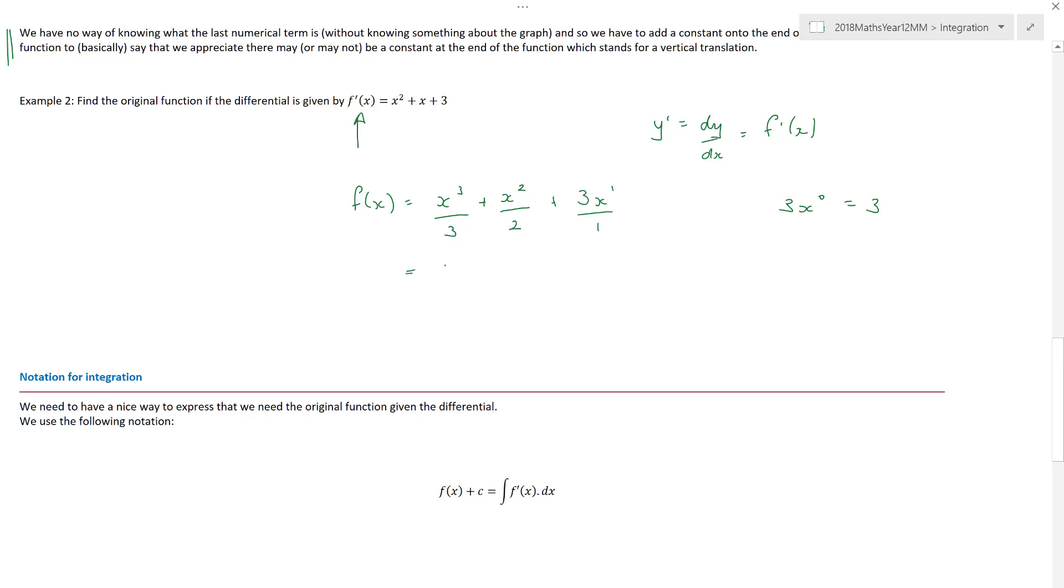Now, just as a word of warning or reminder, remember that can be now written as one third x cubed plus one half x squared plus three x. And is that the end of my question? No, because I don't know what the initial conditions are. And in that situation, I've got to put on a plus c because there may have been a vertical translation.